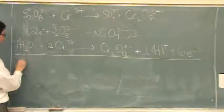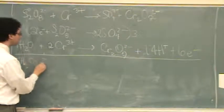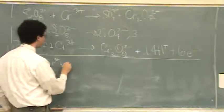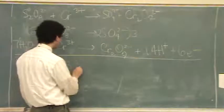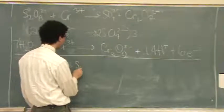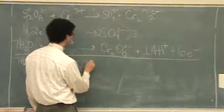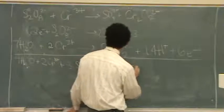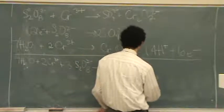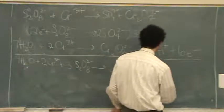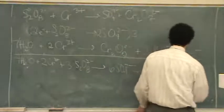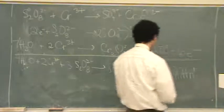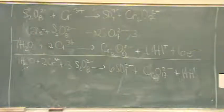So now we've got seven waters plus two chromium three ions plus three of this funky sulfate, the S2O8 two minus, goes to six sulfate ions plus a dichromate ion, plus 14 hydrogen ions, and that should be it. This is our acidic answer.